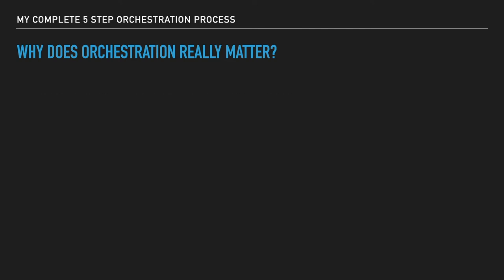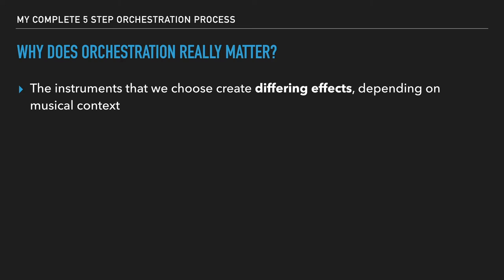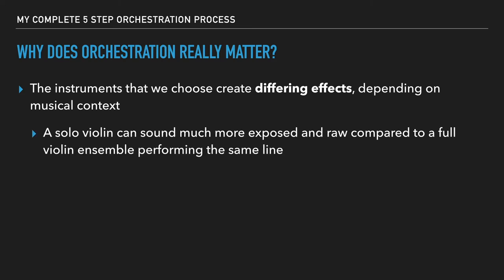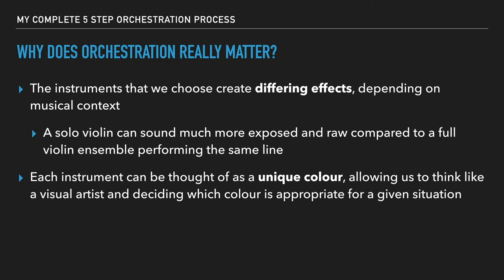So why does orchestration really matter? Well, the instruments that we choose can create differing effects, textures, and timbres depending on the musical context. That's the whole point of the orchestra — each instrument has a unique sound and timbre, and making good use of those is an art in itself. For example, a solo violin can sound much more exposed and raw compared to a full violin ensemble performing that exact same line, and both would be appropriate for different situations. I like to think of each instrument as a unique color, allowing us to think like a visual artist — like a painter deciding which color is appropriate for a given situation. Our job as the arranger and orchestrator is to make sure that the message of the piece of music is enhanced and delivered by the ensemble we are assigning to it.